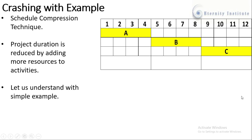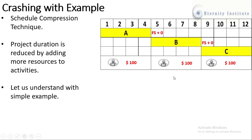Let us understand crashing with a simple example. Here we have the same project with activities A, B, and C, and the duration of the project is 12 days. These three activities are joined together with a finish-to-start relationship. On each activity, one resource is scheduled — one for Activity A, one for Activity B, and one for Activity C.